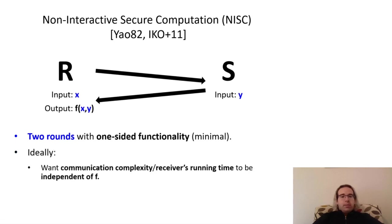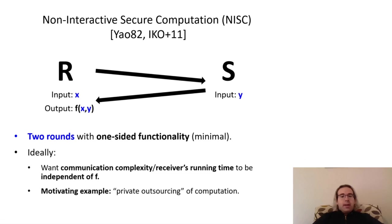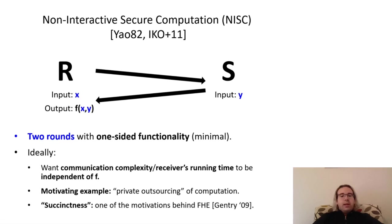Even given minimal round complexity, we still want to minimize the communication complexity of a secure computation protocol. In particular, if we had a protocol where both the communication complexity and the receiver's running time only depended on the input and output lengths of the functionality F, rather than the running time of the functionality itself, such a protocol would be ideal in a private outsourcing of computation setting, where a computationally weak client, the receiver, wants to outsource a complex computation to a powerful server, the sender, while still maintaining privacy of their inputs and the server's private data. This property, which we'll refer to as succinctness, was in fact one of the original motivations given by Gentry when he introduced the now well-known and widely used primitive of fully homomorphic encryption.